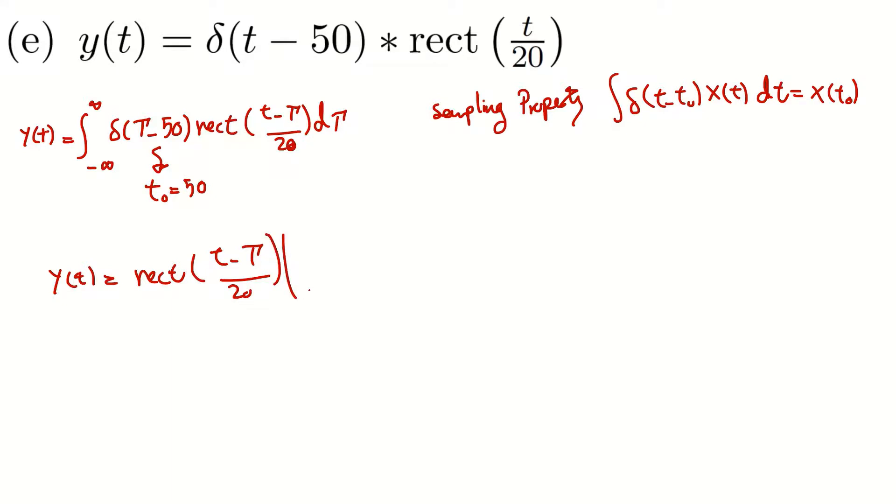At τ equals t₀, which is 50. And this equals rectangular of (t - 50)/20. Okay.